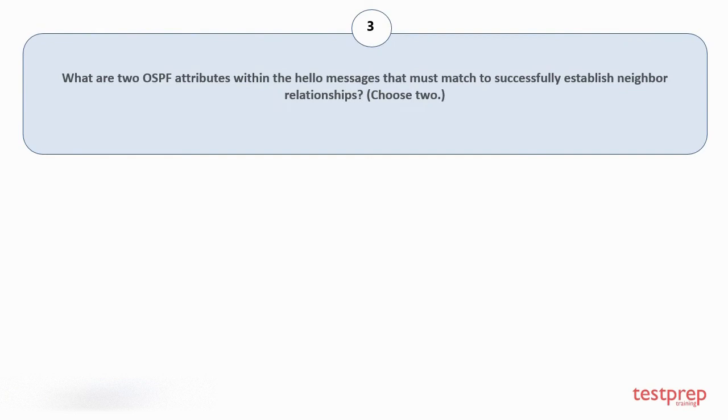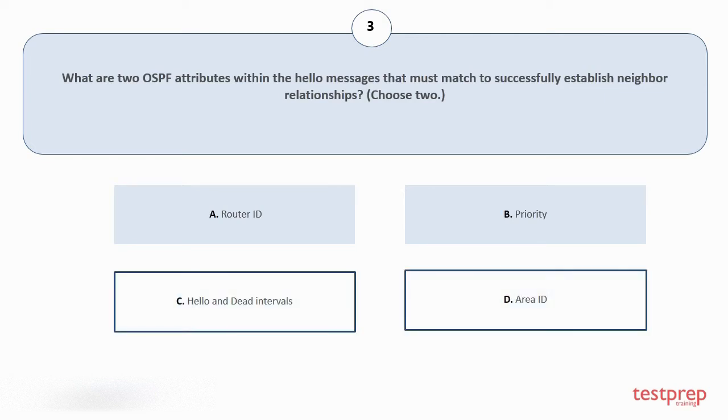Question number 3, What are 2 OSPF attributes within the hello messages that must match to successfully establish neighbor relationships? Choose 2. Your options are: router id, priority, hello and dead intervals, area id. The correct answers are option c and d.